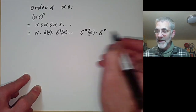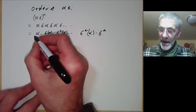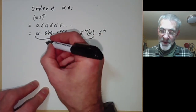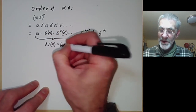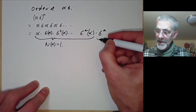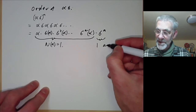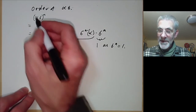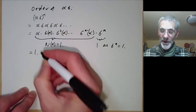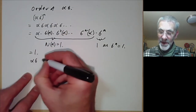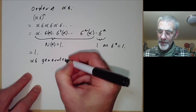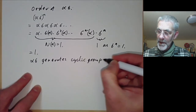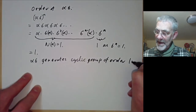The product alpha times sigma(alpha) times ... times sigma^(n−1)(alpha) is just the norm of alpha, which equals 1. And sigma^n equals 1 because sigma has order n. So (alpha sigma)^n equals 1, meaning alpha sigma generates a cyclic group of order dividing n.